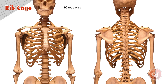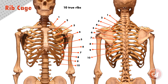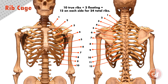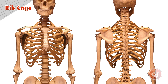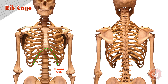The rib cage is made up of 10 true ribs. True ribs all connect to the sternum on the front of the rib cage, and there are two floating ribs at the bottom that do not connect around to the front but float at the bottom giving a little extra protection. This means there are 12 ribs on each side for a total of 24 ribs. The true ribs connect to the sternum through a section of cartilage, which is more flexible than bone and allows the rib cage to fluctuate when we breathe. At the bottom of the sternum is a small point that sticks out called the xiphoid process.